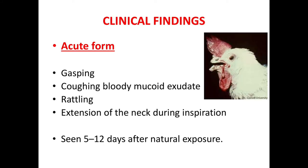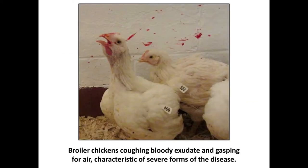Clinical findings vary between acute and subacute forms. In the acute form, gasping, coughing, rattling, and extension of the neck during inspiration — known as pump handle respiration — are seen 5 to 12 days after natural exposure. You can see broiler chickens expectorating bloody exudate and gasping for air, which is this characteristic pump handle respiration.